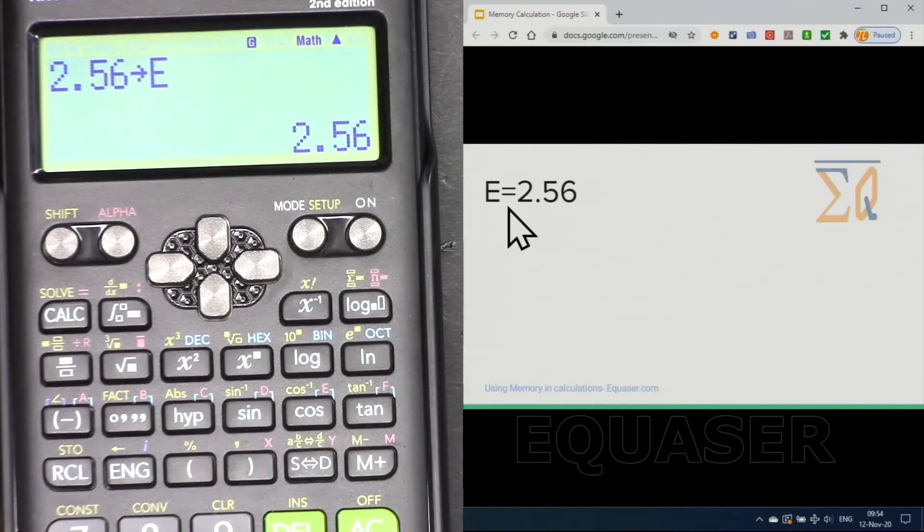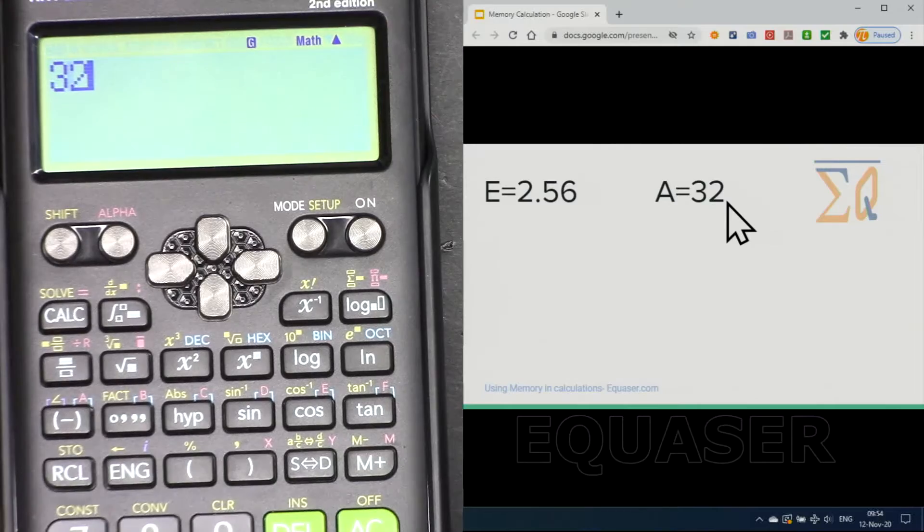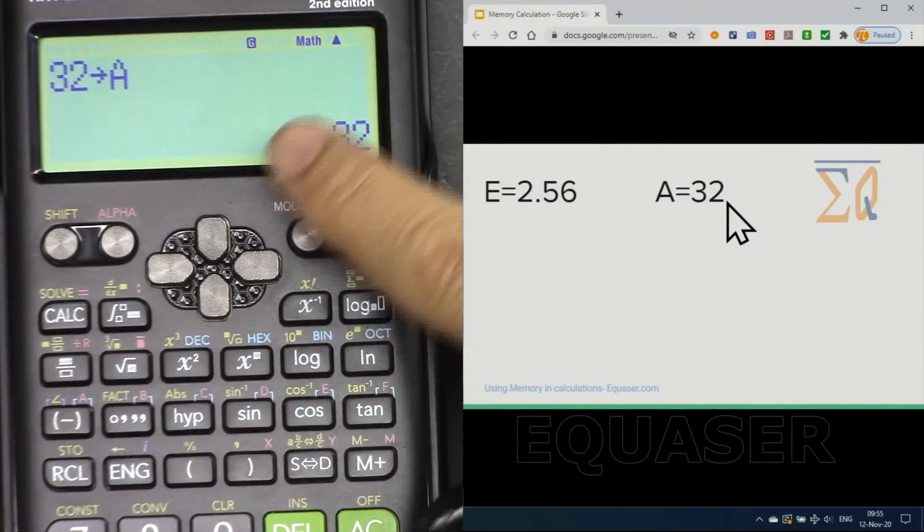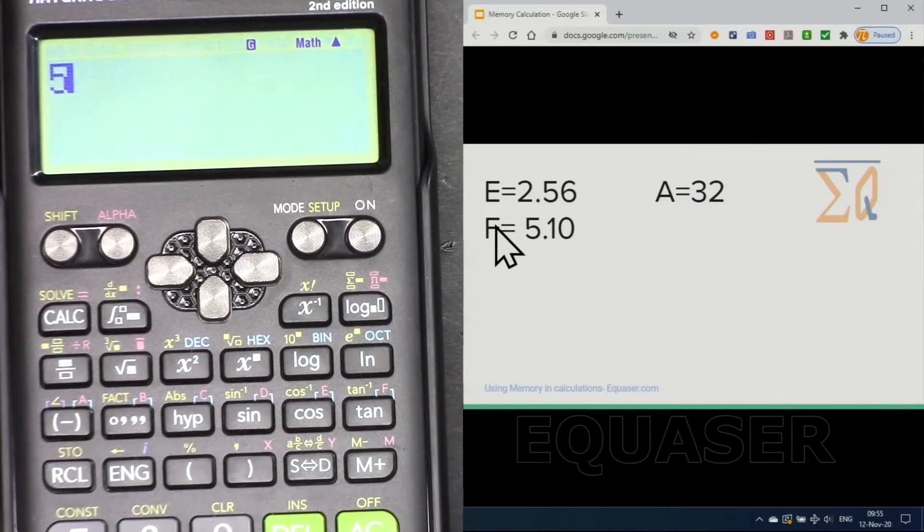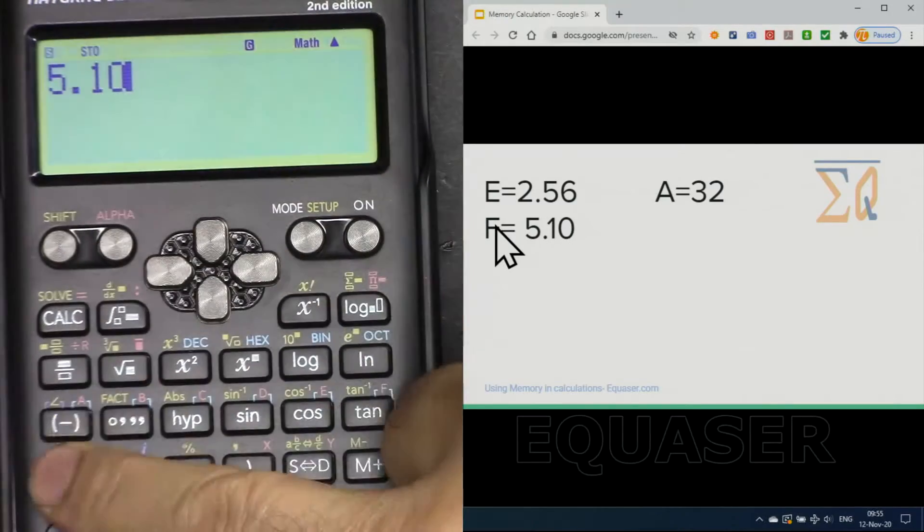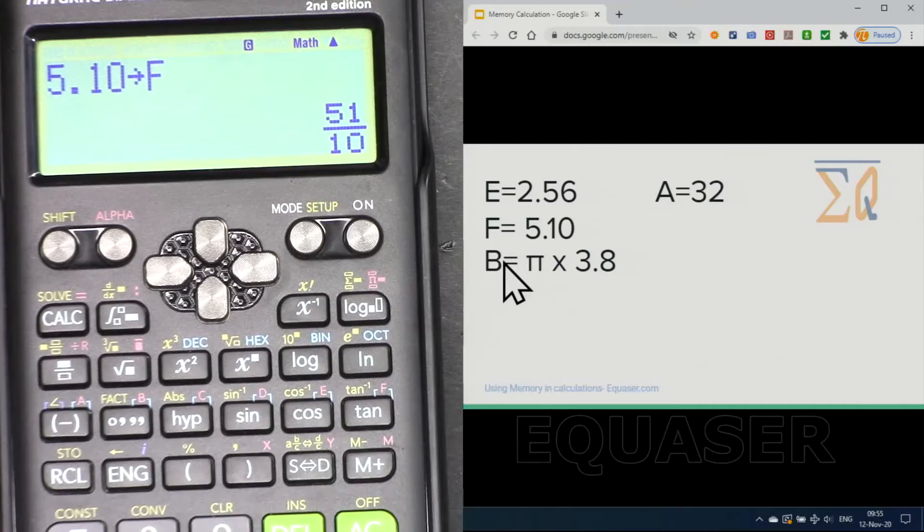Now let's see 32 into A. 32 shift store A, and let's say 5.10 into F. 5.10 shift store F.